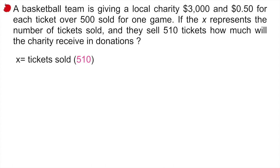So they're telling us in the problem that x is going to represent the number of tickets sold, and we know that is 510. And then they said that for every ticket over 500, they're going to give them 50 cents. So number of tickets sold over 500 is going to represent whatever tickets they sell minus 500, because it has to be everything over 500. So the way that we set up our equation would be like this. We say the team is giving them $3,000, which they said right off the bat they have that, plus 50 cents for every ticket over 500.